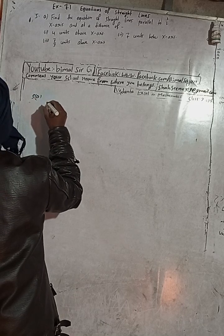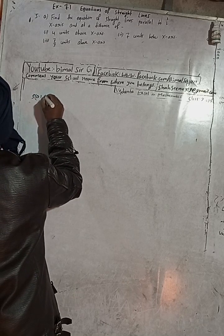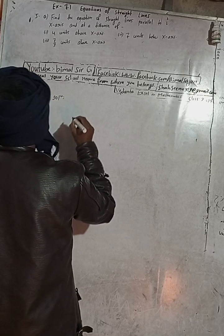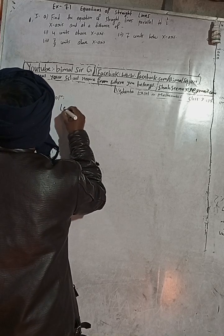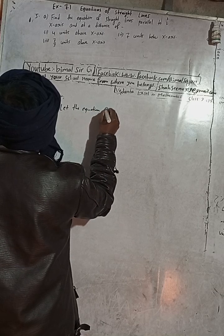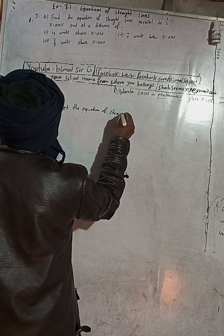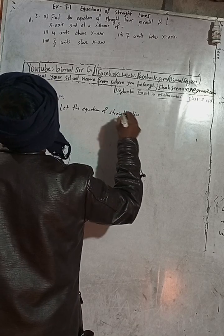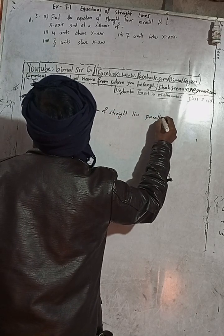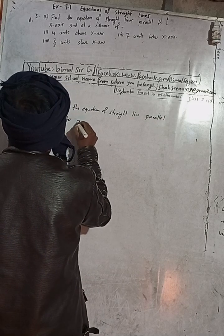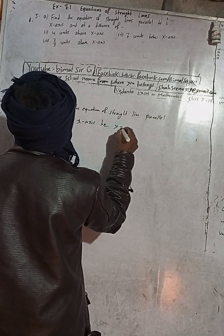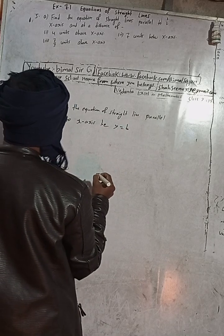Solution for 5a, number one: find the equation of a straight line. Let the equation of a straight line parallel to the x-axis be y is equal to b.